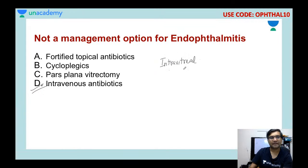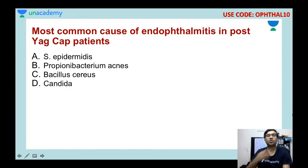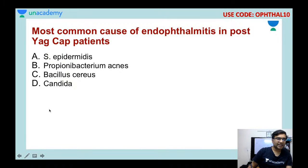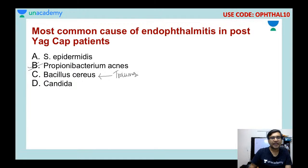Fourth question: the most common cause of endophthalmitis in post-YAG capsulotomy patients is Staphylococcus epidermidis, Bacillus cereus, Propionibacterium acnes, or Candida? The answer is Propionibacterium acnes. For post-trauma endophthalmitis, it is Bacillus cereus. For immunosuppressed patients, it is Candida.